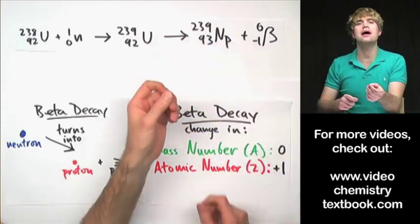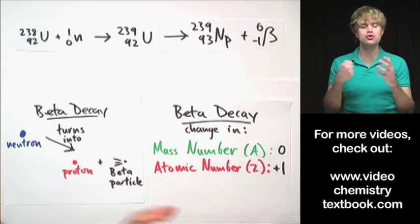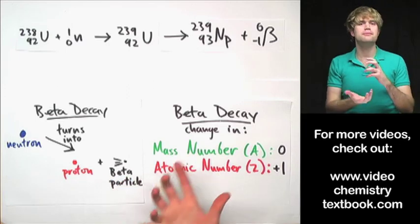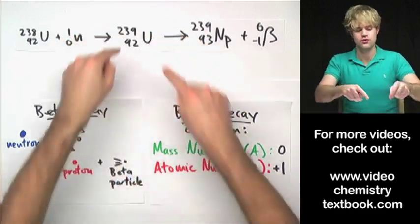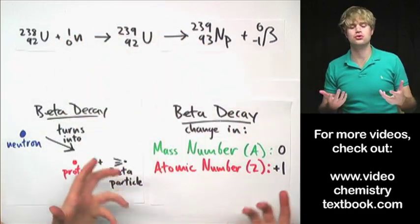So often by adding neutrons to things, you can end up changing the number of protons because after you add that neutron, the new thing you've made will go through some sort of decay.